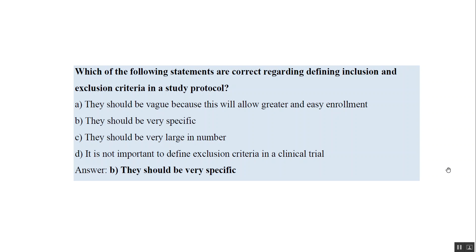Which of the following statements are correct regarding defining inclusion and exclusion criteria in a study protocol? They should be vague because they allow greater and easy enrollment — no, everything has to be specific in any research, so vagueness is not allowed. They should be very specific — yes. They should be very large in number — no, fewer inclusion and exclusion criteria can be sufficient. It is not important to define exclusion criteria in a clinical trial — no, you have to define exclusion criteria in any kind of clinical trial. So the answer here is B.